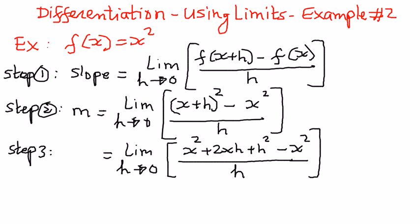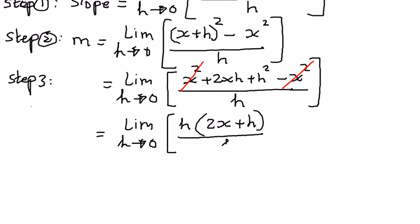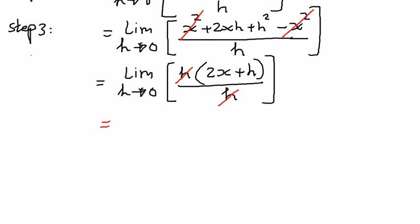If we see similar terms which are equal in magnitude but opposite in sign, we can cancel them out. Positive x squared and negative x squared cancel out. So we are left with limit as h approaches 0. Since h is common in the numerator and denominator, we can factor it out and write it as h times 2x plus h, all divided by h. The h cancels out, leaving us with the limit as h approaches 0 of 2x plus h.